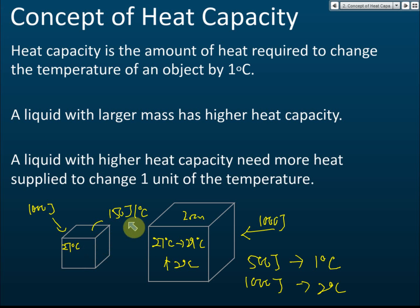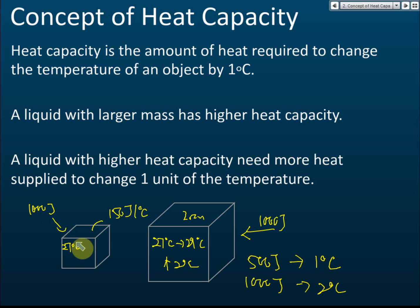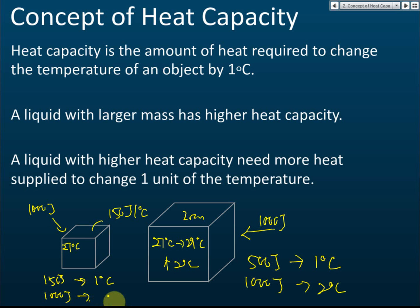The smaller block has a lower heat capacity — it only needs 150 joules to change the temperature by one degree Celsius. So if you give it 1000 joules, the temperature change will be 1000 divided by 150, which is approximately 6.7 degrees Celsius — around 7 degrees Celsius.